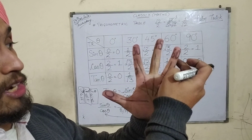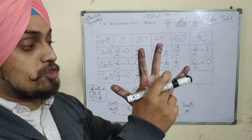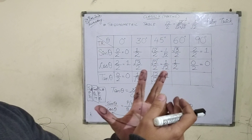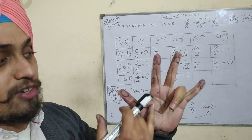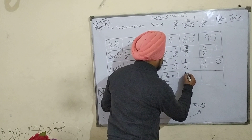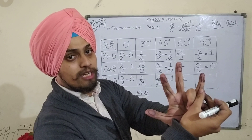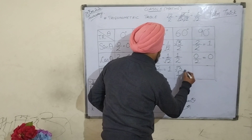For tan 60 degree, just bend this finger. See how many fingers are to the left of it — 3 fingers. Take the square root of 3, which is √3. Now see how many fingers are to the right of it — only 1 finger. Take the square root of 1, that is 1. So √3 by 1, or simply √3, is the value of tan 60 degree.